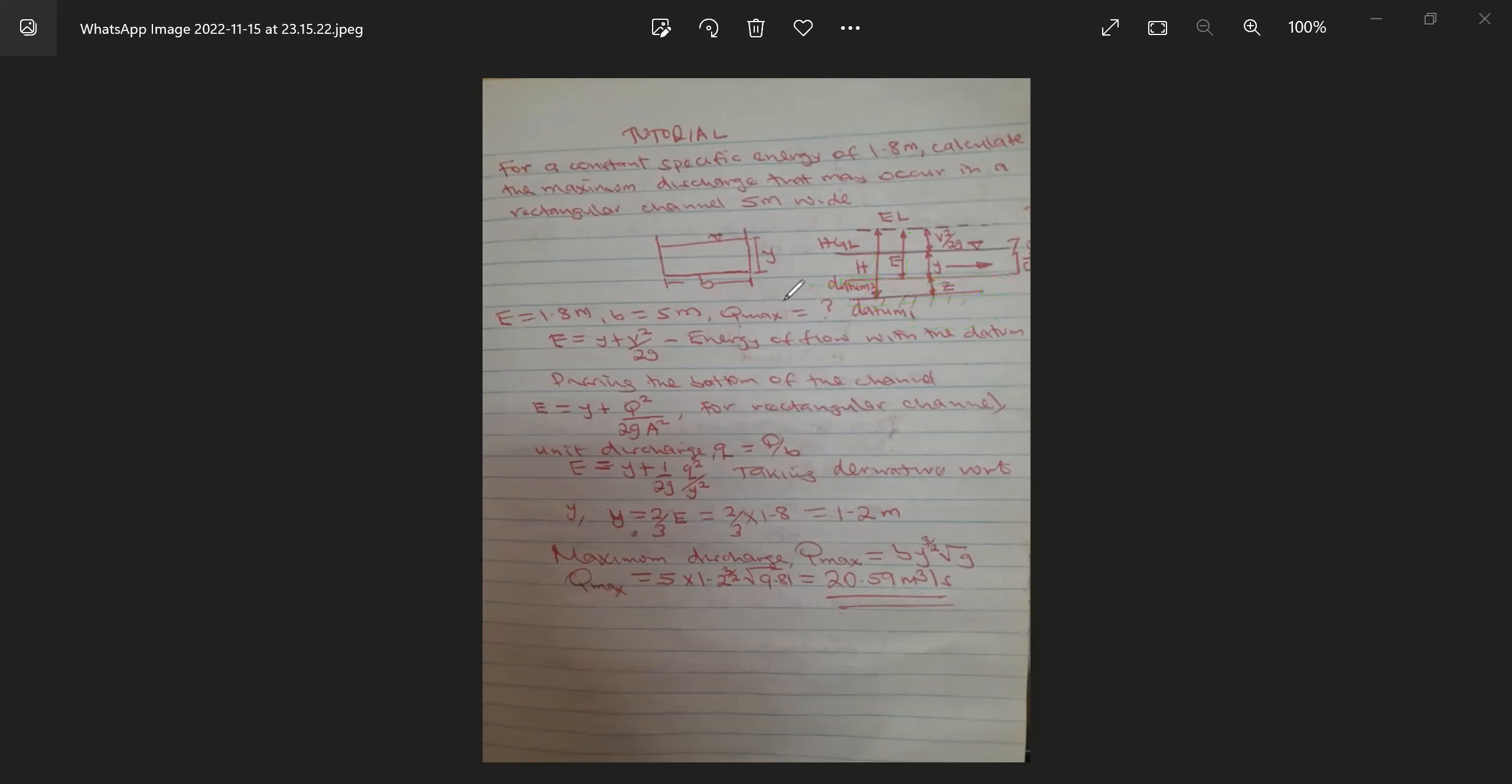So from there, we'll come and say: we have been given energy E as 1.8 meter, breadth B as 5 meter. Now Q max is our equation. How do we compute Q max? We know that specific energy head will be equivalent to pressure head plus velocity head.